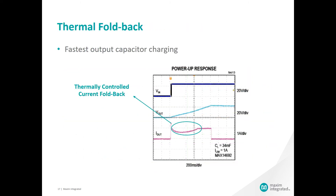Another feature on this part is thermal foldback. For large output capacitors, there is high power dissipation during the startup phase, which raises internal temperature. When the junction temperature reaches an internal threshold of 145 degrees C, the device starts to regulate temperature and throttles back the current as needed. You can see it on the pink trace — as the output builds up, the temperature falls below the threshold and the current comes back to normal. This approach allows the fastest charging of output capacitors while maintaining internal temperature at acceptable, safe values.